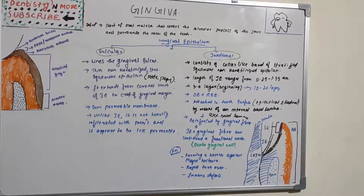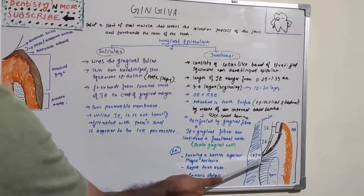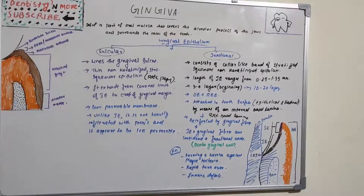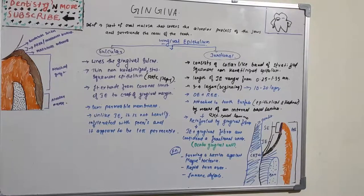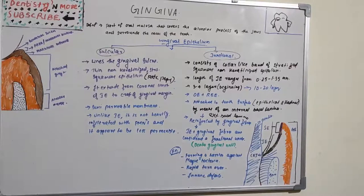The attachment of junctional epithelium to the tooth is reinforced by the gingival fibers, which raise the marginal gingiva against the tooth surface. For this reason, the junctional epithelium and gingival fibers are collectively known as the dentogingival unit — a functional unit.